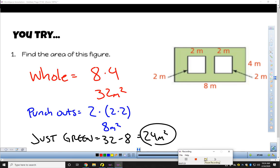All right. The whole thing I found in red, that's this 8 by 4. That's the whole figure. The punch outs are 2 by 2, and they're identical. So I did 2 by 2 for one punch out, and then I doubled that to get 8. Just the green would be taking the whole thing, 32, minus the 8 of the punch outs for an area of 24 meters squared.